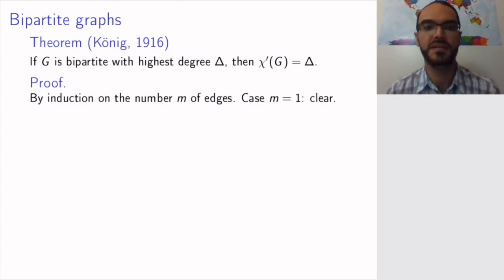We're going to prove this by induction on the number of edges. In a graph with one edge, this is clear—it's one edge colorable. Now, before I move on with the proof, just a word of warning about bipartite graphs.